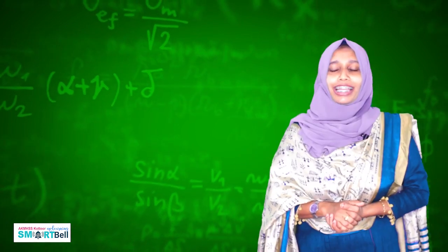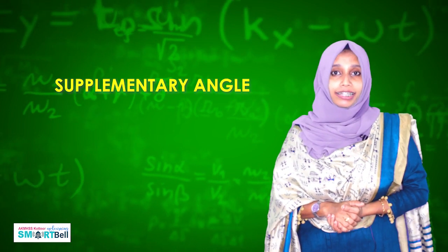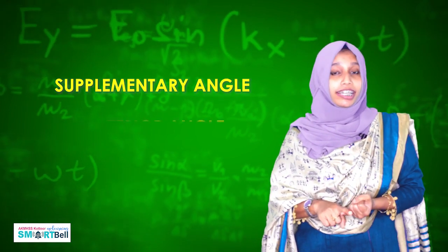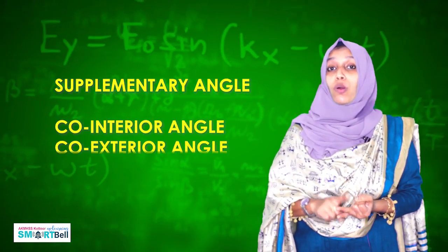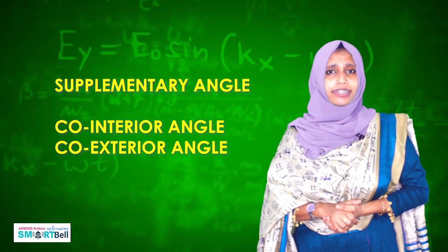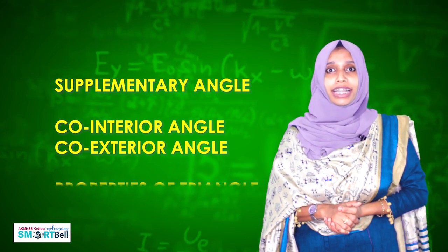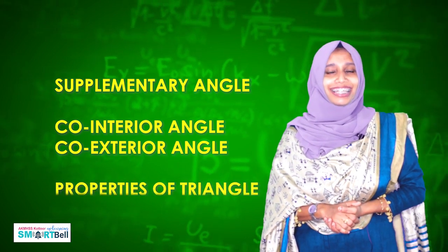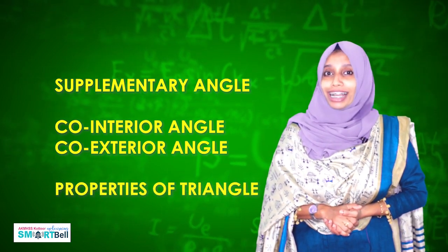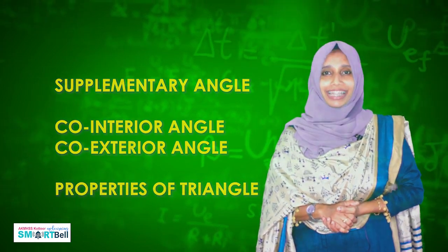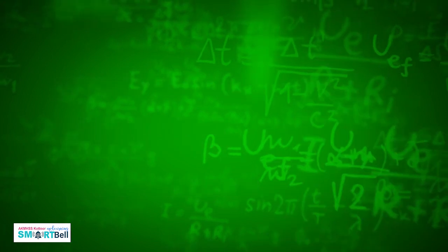Today we learned supplementary angles, co-interior angles, co-exterior angles, and we discussed one important point: the sum of angles of a triangle is 180 degrees. Let's wind up the class. Stay cool, be happy, have a nice day. Thank you.